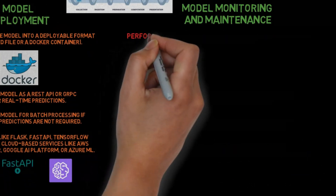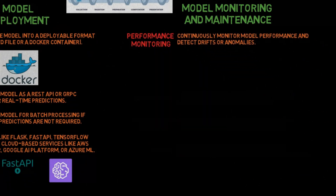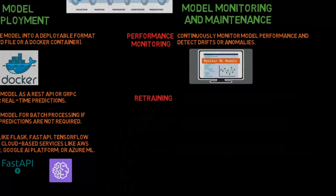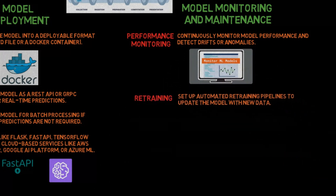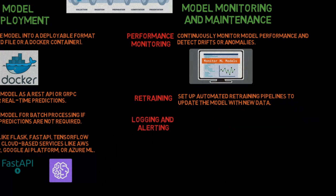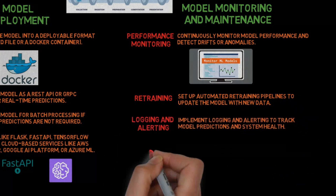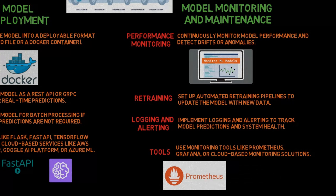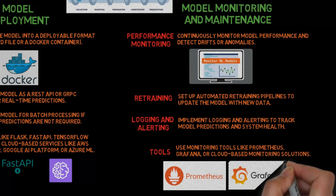Step 8: Model monitoring and maintenance. Performance monitoring: Continuously monitor model performance and detect drifts or anomalies. Retraining: Set up automated retraining pipelines to update the model with new data. Logging and alerting: Implement logging and alerting to track model predictions and system health. Tools: Use monitoring tools like Prometheus, Grafana, or cloud-based monitoring solutions.